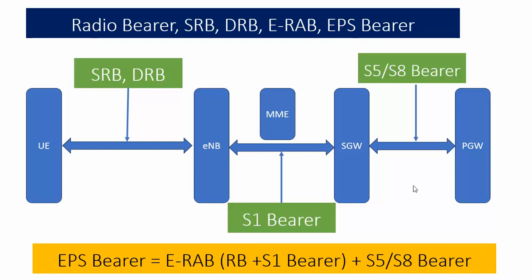When the connection is established between the P-Gateway through eNodeB and S-Gateway, data starts to flow. The EPS bearer equals ERAB plus S1 plus S5/S8 bearer. So if the bearer between UE and S-Gateway — the S1 bearer — is established, and the S5/S8 bearer between S-Gateway and P-Gateway is also established, that means the EPS bearer is established and communication between the user and server can start.